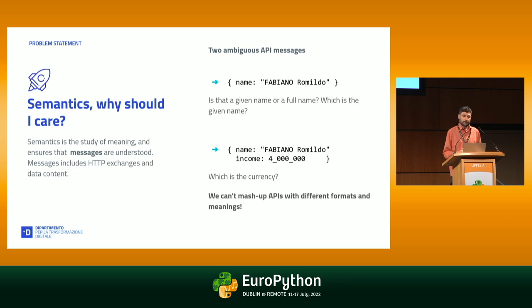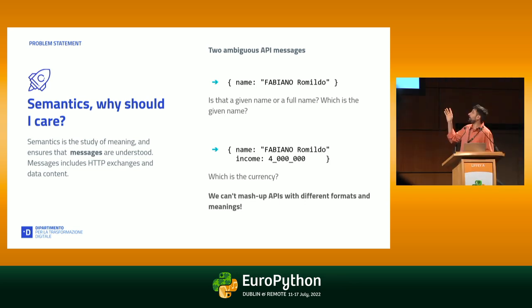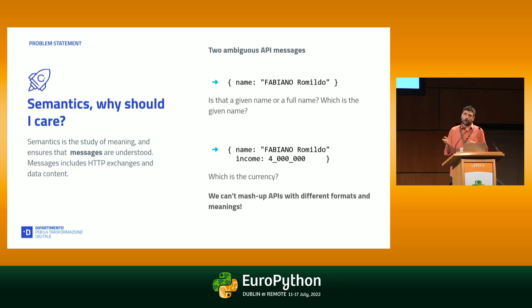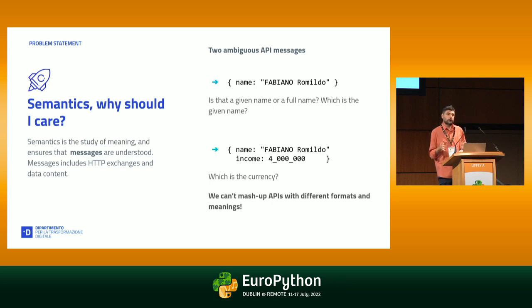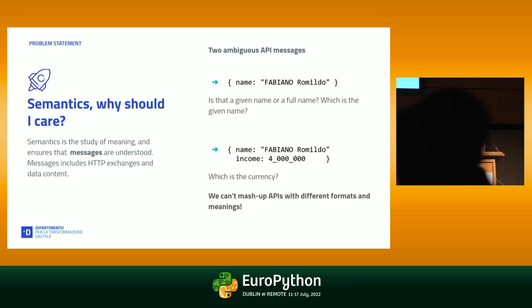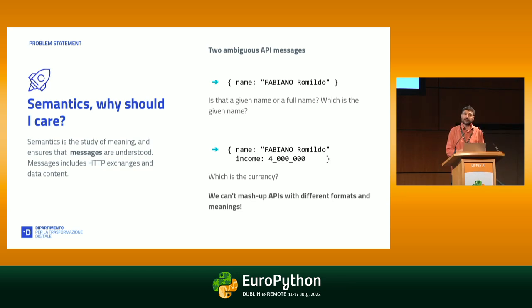Let's see a simple example. What's semantic? Semantic is the study of meaning, and this is important to be sure that the message is understood. We can see two different API messages, but those are not very clear. In the first case we don't know if it is a full name or just a first name, and if it is a full name, which is the first and which is the family name. In the second case, we know that Fabiano Romildo earns 4 million something, but we don't know what currency 'something' is. So if we have to exchange this message with another country that has a different currency, this message can be problematic to integrate.